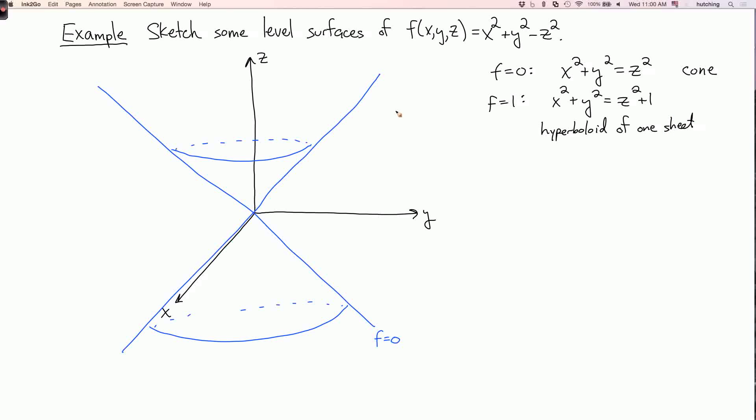And let's draw that in our picture. So here it is, it's outside of the cone. So this is the level surface, f equals one, or level set, f equals one.